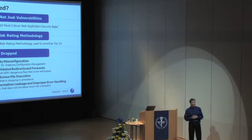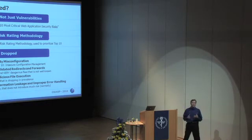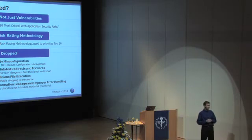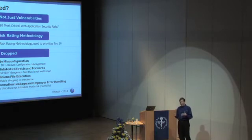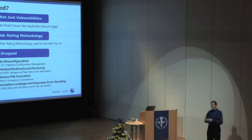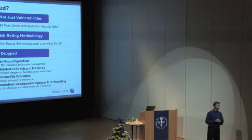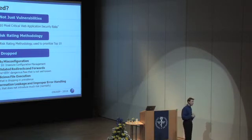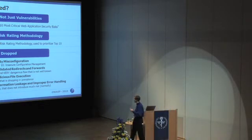That caused some things to fall off the list, and some were controversial — like dropping information leakage and error handling. These are incredibly prevalent issues; tools are really good at finding them. But our thought was that the underlying root cause of a lot of those information leaks is the more important risk. If you fuzz something and get a stack trace or a piece of SQL back, you probably have a SQL injection flaw — fix that first because that's where the biggest risk is. We're not saying dropped items aren't important, but it's all relative.